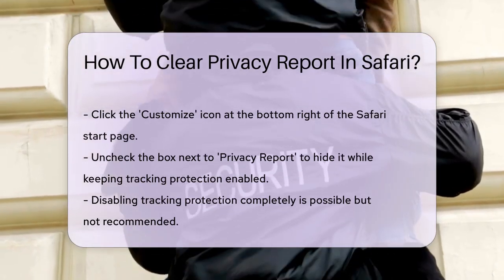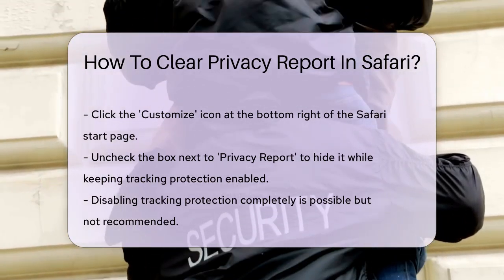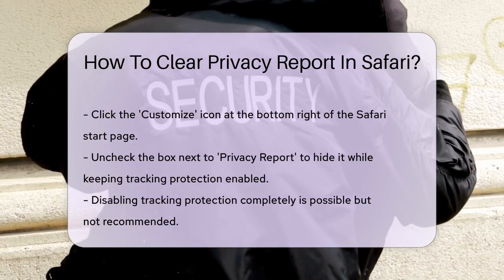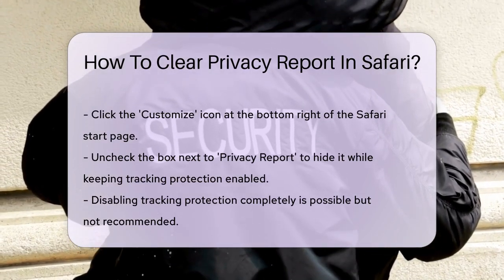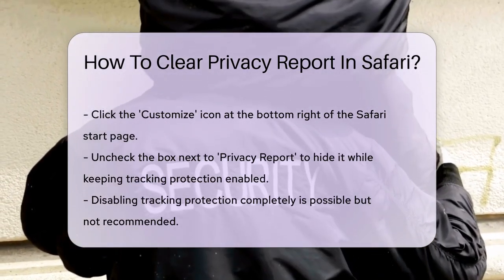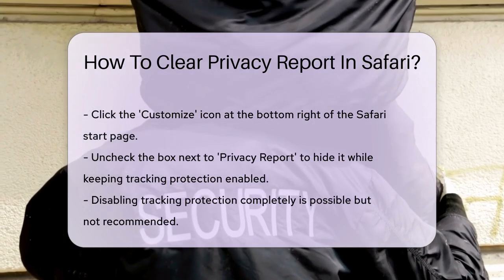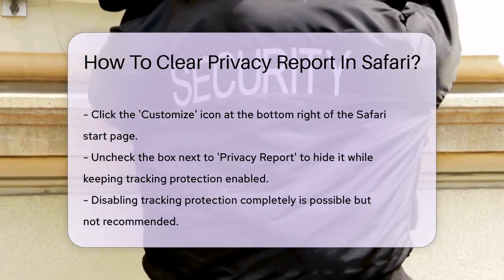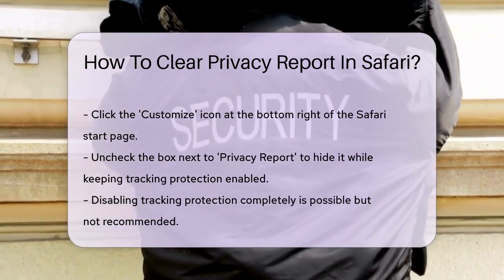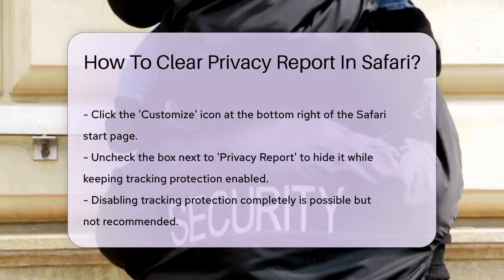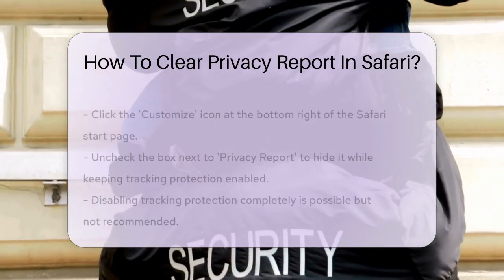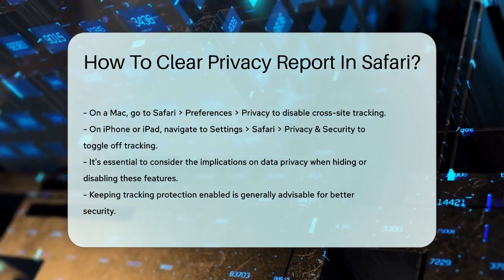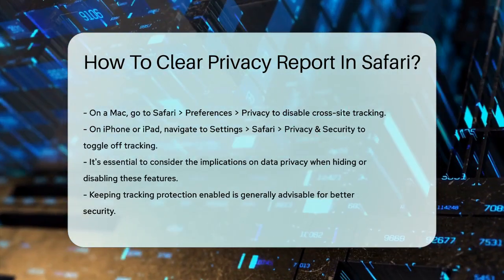If you want to completely disable the tracking protection and thus the privacy report, you can do so, but it's not recommended as it compromises your browsing security. On a Mac, go to Safari, Preferences, Privacy, and uncheck the box for Prevent Cross-Site Tracking. On an iPhone or iPad, go to Settings, Safari, Privacy and Security, and toggle off Prevent Cross-Site Tracking.